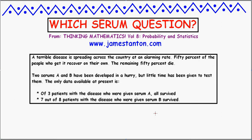Now here's the puzzle. You have just discovered that you have the disease. Would you take serum A or serum B? Let's assume that for some reason you can't take both — you've got to choose one or the other. Without them, you know you're going to have a 50% chance of surviving. Option one seems pretty good: of all the people that took serum A, all of them survived. But it's only three people — a very small sample.